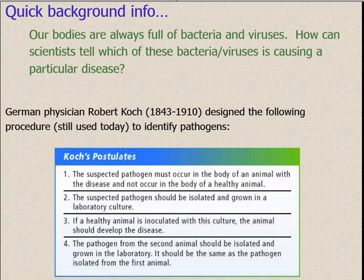In step number one, the suspected pathogen must occur in the body of an animal with the disease and not occur in the body of a healthy animal. So you have to have a suspected pathogen, and if you find it in one and not in the other, you're on the first step.